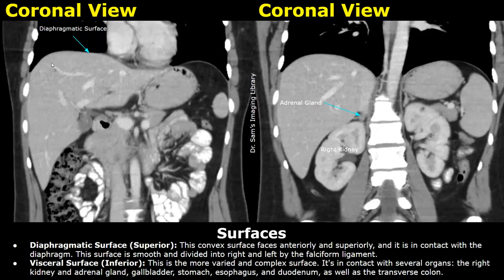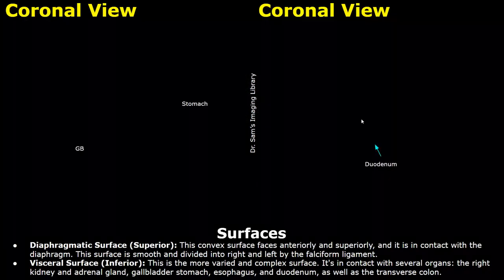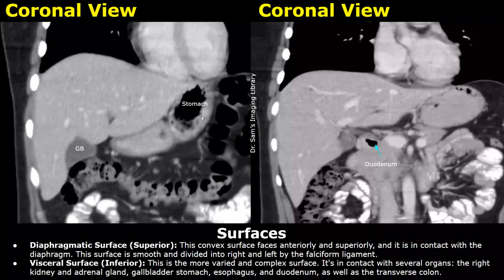Here is the liver in the right upper quadrant. This is a coronal image on a CT scan with contrast. Firstly, we will talk about its surfaces. The diaphragmatic surface is the superior surface of the liver — it is convex shaped and is in contact with the diaphragm. The inferior surface is the visceral surface; it is a complex surface as it is in contact with many organs. Here you can see it is in contact with the right kidney and the adrenal gland. This structure with gas is the stomach, and the esophagus is also around this area above the stomach.